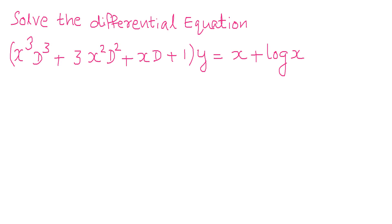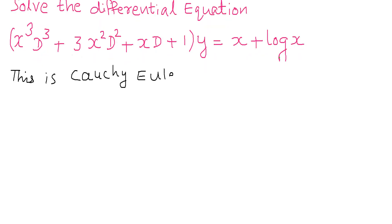Here in this question, d cube has x cube as coefficient. Similarly, d square has 3x square as coefficient and d has x as coefficient. Therefore, the given equation is of Cauchy-Euler form.